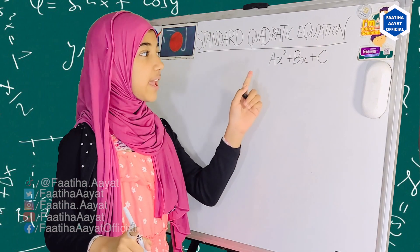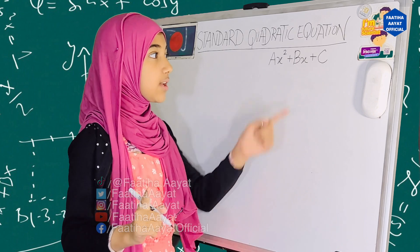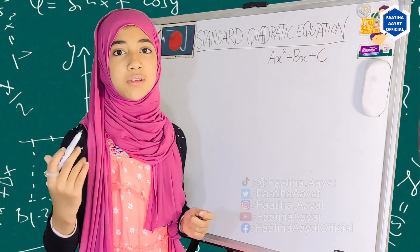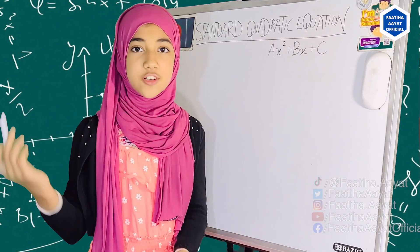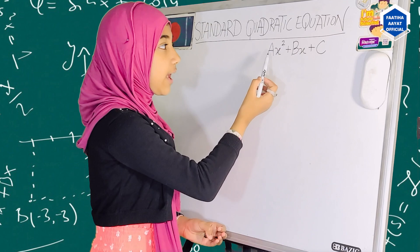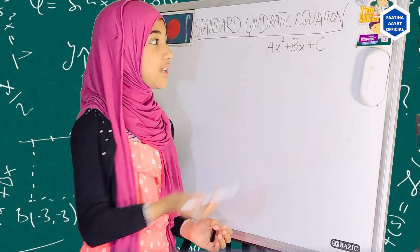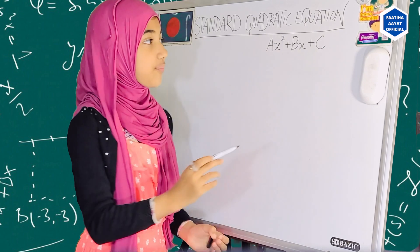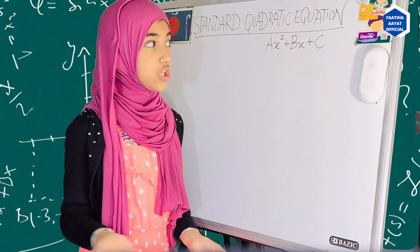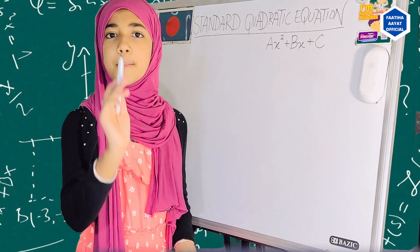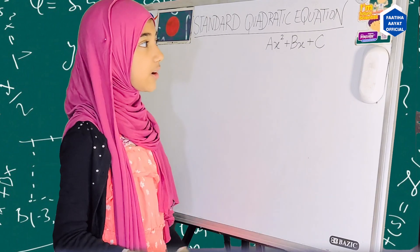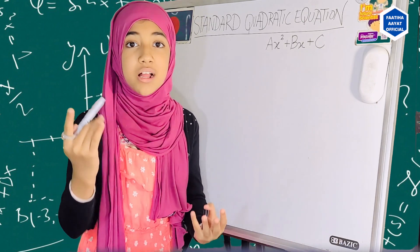Now, here, a is basically a coefficient, b is also a coefficient, but c is a constant. Now, you may ask me why. A coefficient is any number that is multiplied with a variable. In this case, our a is a coefficient because it is multiplied with our x squared. Same way, our b is also a coefficient because it is multiplied with our x. But you may ask me why isn't c a coefficient? Why is it a constant?